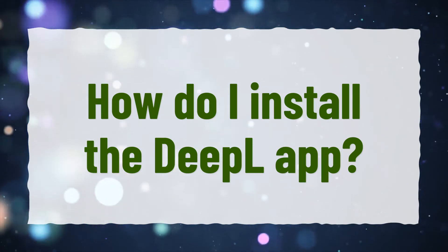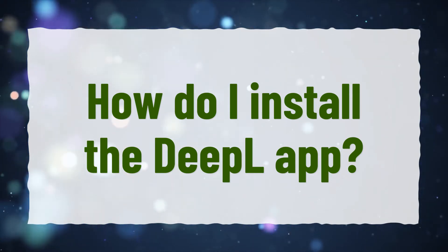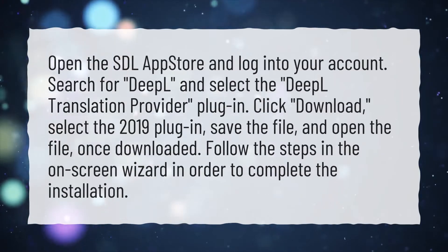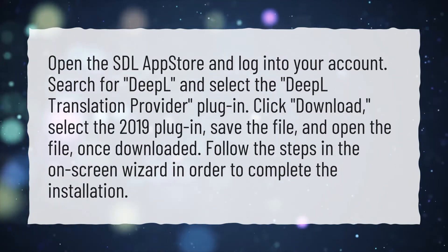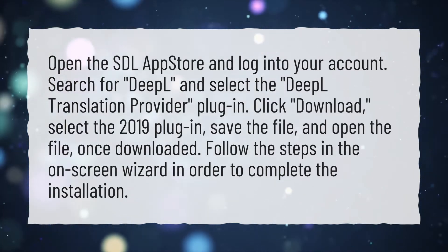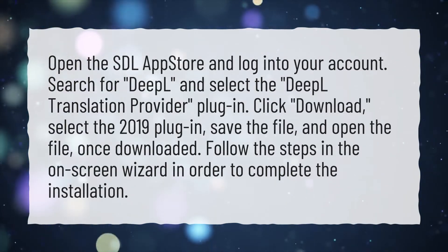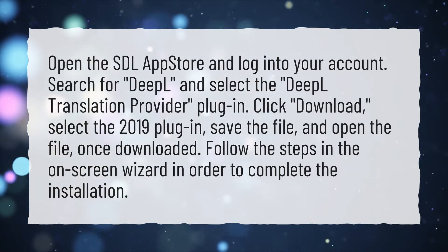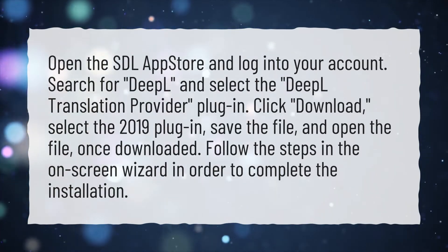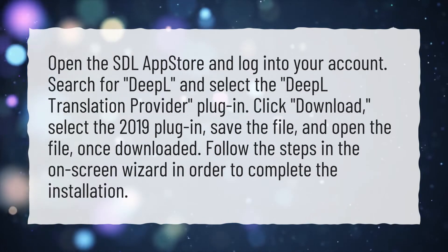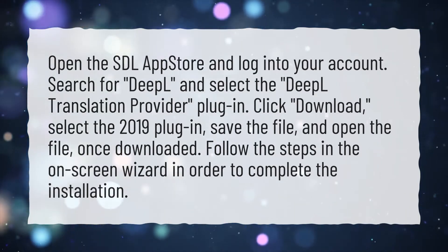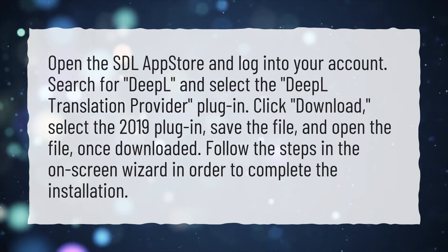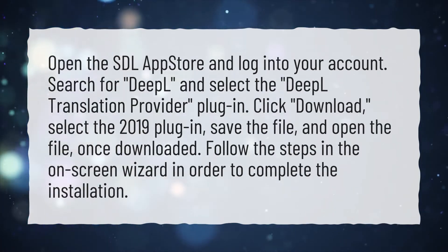How do I install the DeepL app? Open the SDL App Store and log into your account. Search for DeepL and select the DeepL Translation Provider plugin. Click Download, select the 2019 plugin, save the file, and open the file once downloaded. Follow the steps in the onscreen wizard in order to complete the installation.